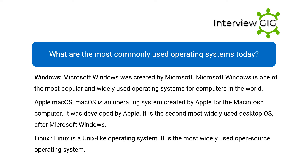What are the most commonly used operating systems today? Microsoft Windows, created by Microsoft, is one of the most popular and widely used operating systems for computers in the world. Apple Mac OS is an operating system created by Apple for the Macintosh computer; it is the second most widely used desktop OS after Microsoft Windows. Linux is a Unix-like operating system and is the most widely used open-source operating system.